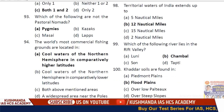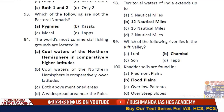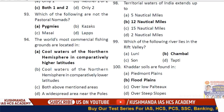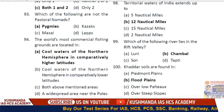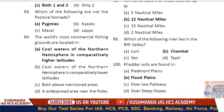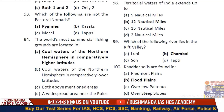Question 93: Which of the following are not pastoral nomads? Option A — Pygmies. Question 94: The world's most important commercial fishing grounds are located in cool water in the northern hemisphere at comparatively higher latitudes.